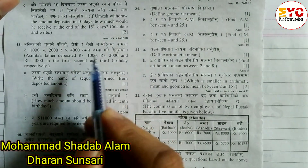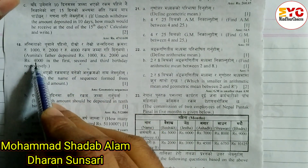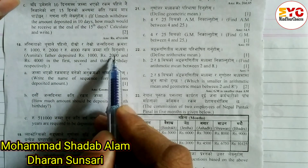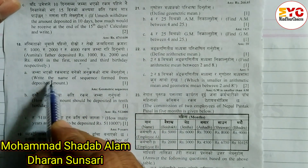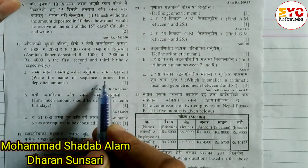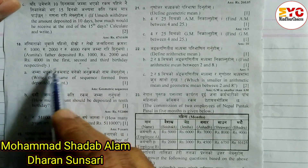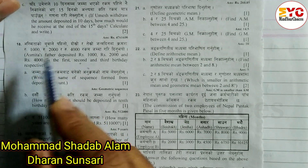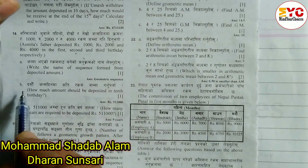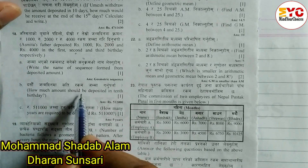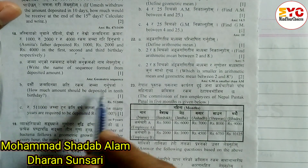The amounts are doubling: 1,000 to 2,000 — that's double — then 2,000 to 4,000, an increase of 4,000. Part A: write the name of the sequence formed from the deposit amounts. Part B: how much amount should be deposited on the 10th birthday?